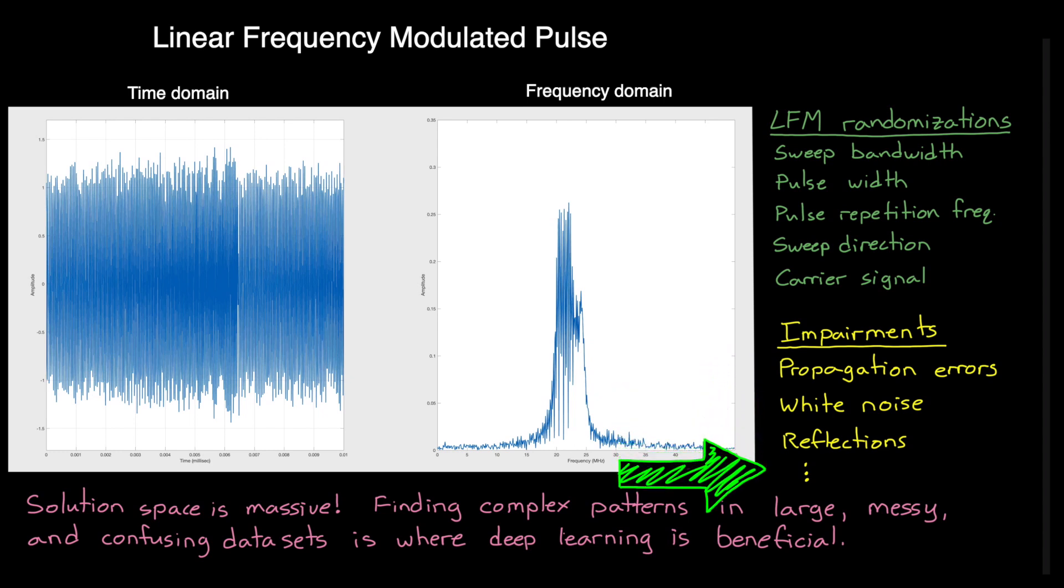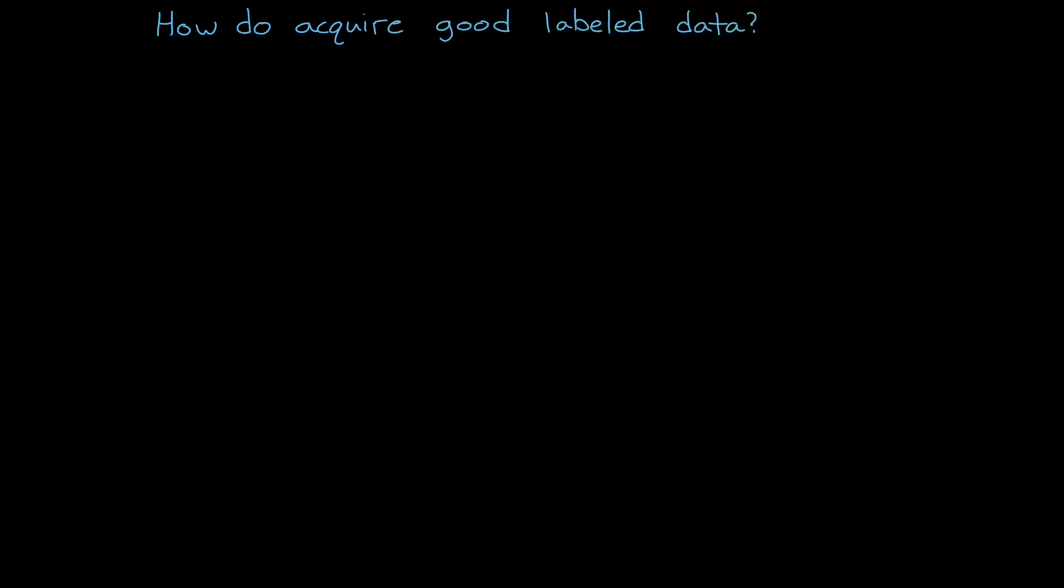So, the next question is, how do you acquire this labeled data? And one way, if you're lucky, is to just use an existing database. For example, if you're working with images, you can just start from an image database, like ImageNet, and then you can add to that database with your own labeled data to fill in any missing gaps.